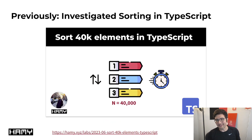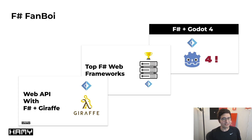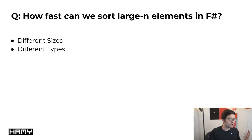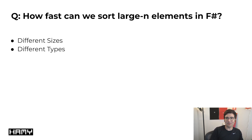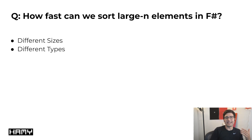So why are we doing this? Last week I did a little investigation into how fast I can sort 40,000 elements in TypeScript to basically win an argument. And if you've been following along, you know that I'm kind of like a cult fan of F#, maybe not that healthy. And so it got me wondering — the TypeScript results were actually a lot faster than I had anticipated. So if F# is supposed to be a little bit faster and I like it a lot more, let's see what it does and how it compares. That's the question we're going to be answering in this video, really exploring how fast we can sort a large N list of elements in F#.